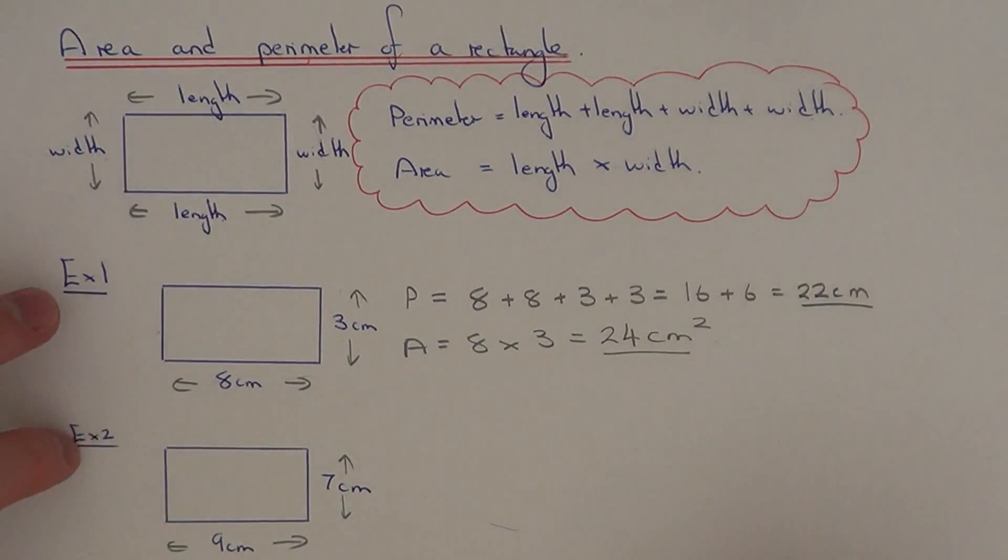So let's move on to example two. This time we have a nine centimetre by a seven centimetre rectangle.